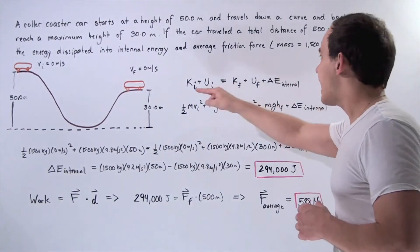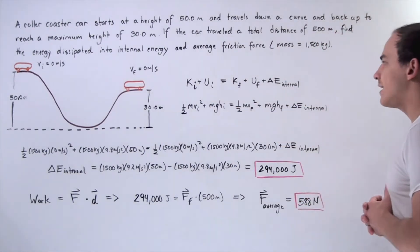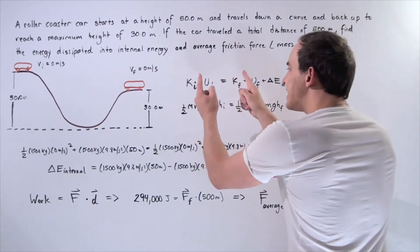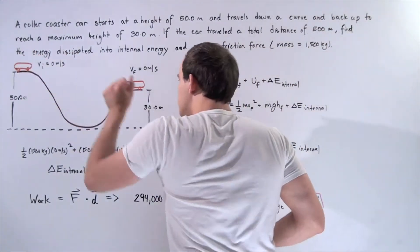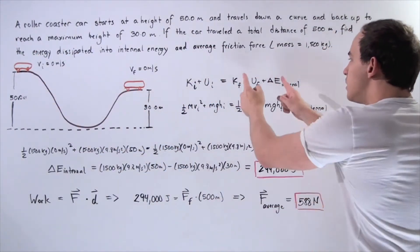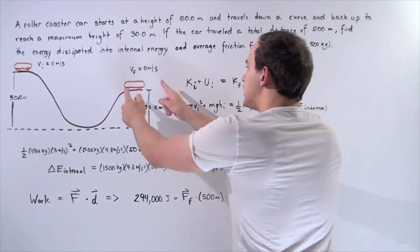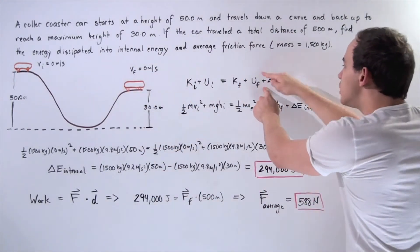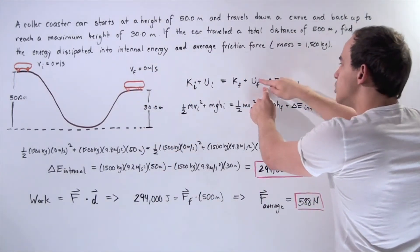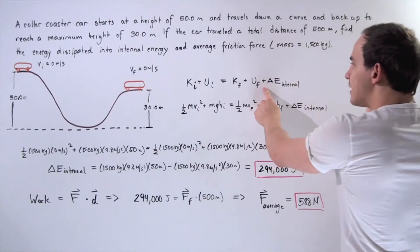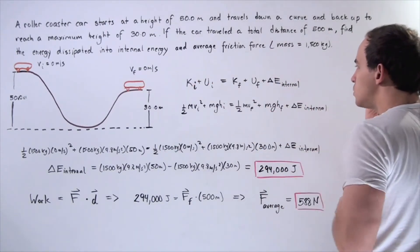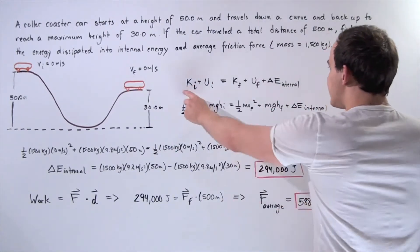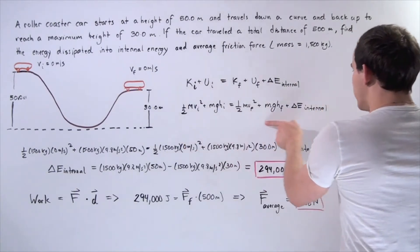Let's begin by writing our law of conservation of energy. The sum of the mechanical energy in the initial system is equal to the sum of the mechanical energy in the final system plus the change in thermal energy, the change in internal energy of our object and the coaster.